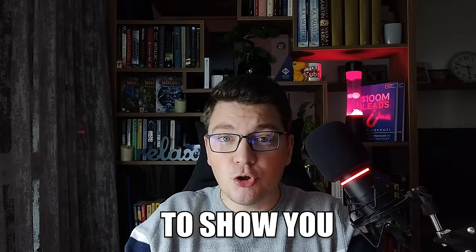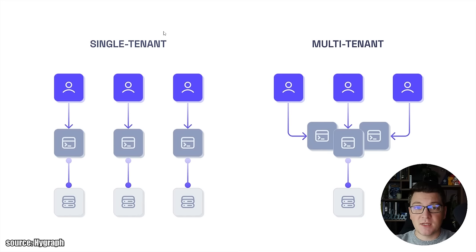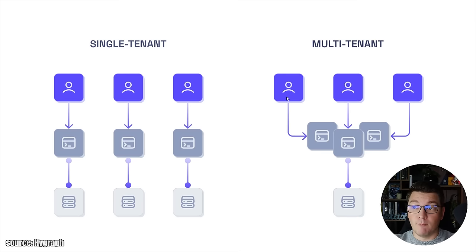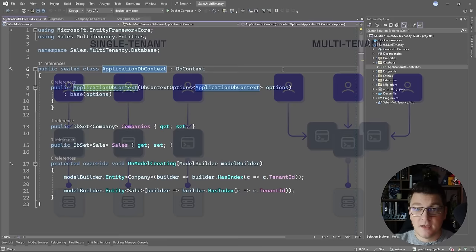Multi-tenant architecture is common in today's web applications, so I'm going to show you how to implement multi-tenancy using EF Core in a single database and a multi-database scenario. In a single tenant architecture, each user has dedicated compute and storage resources. In a multi-tenant scenario, multiple users share the compute and storage resources in your system. This is practical in software-as-a-service applications where many users are going to be using the same system.